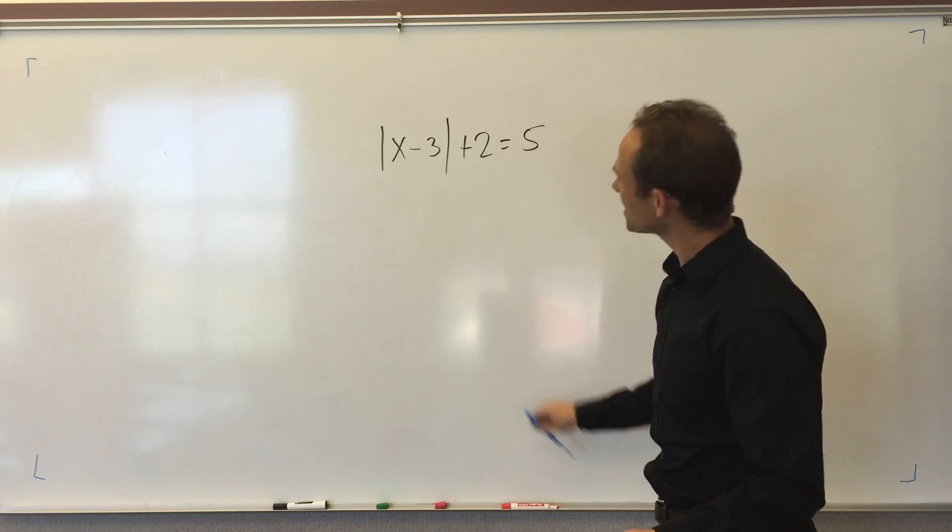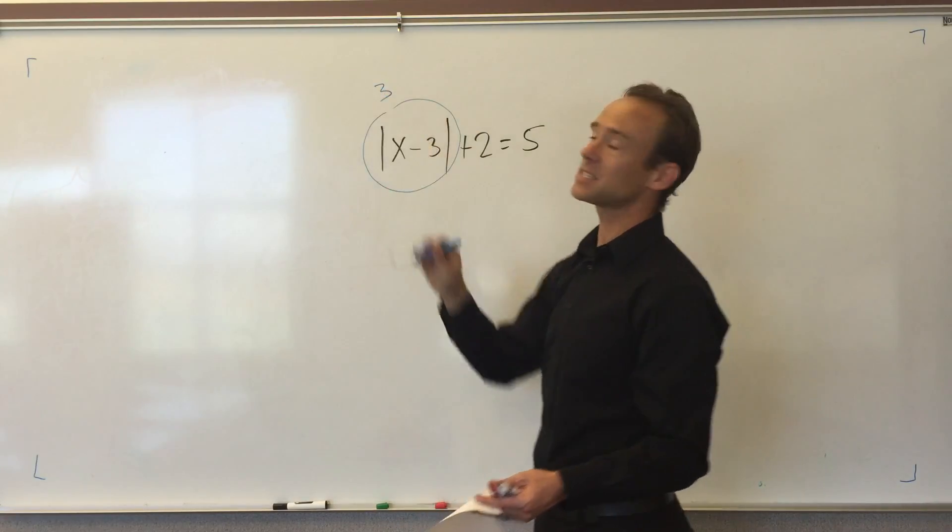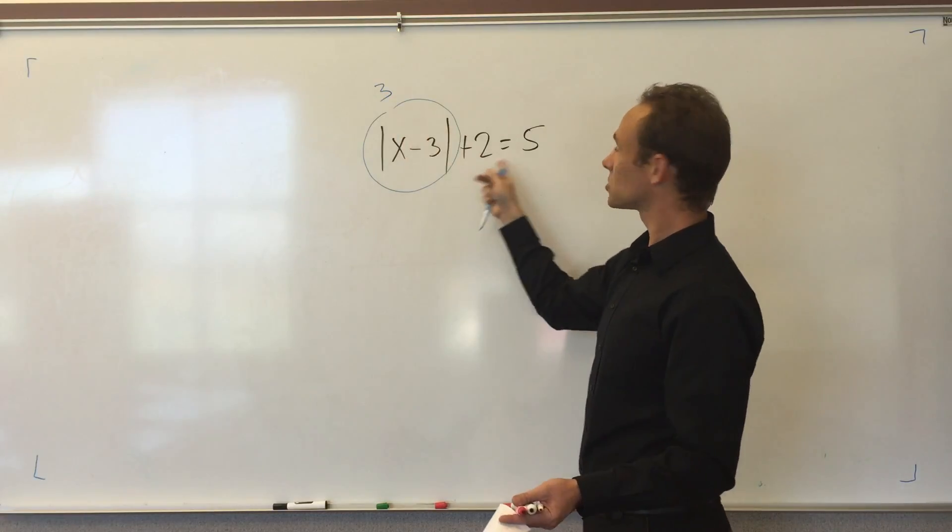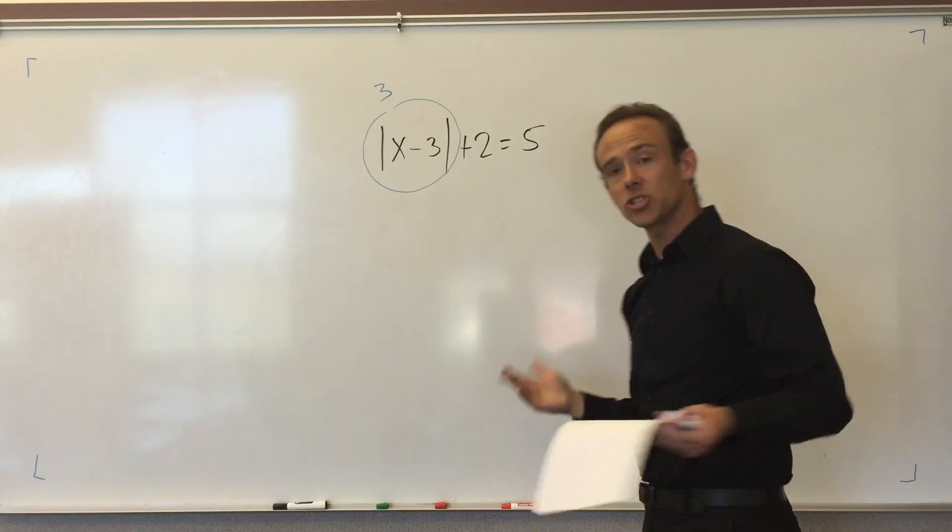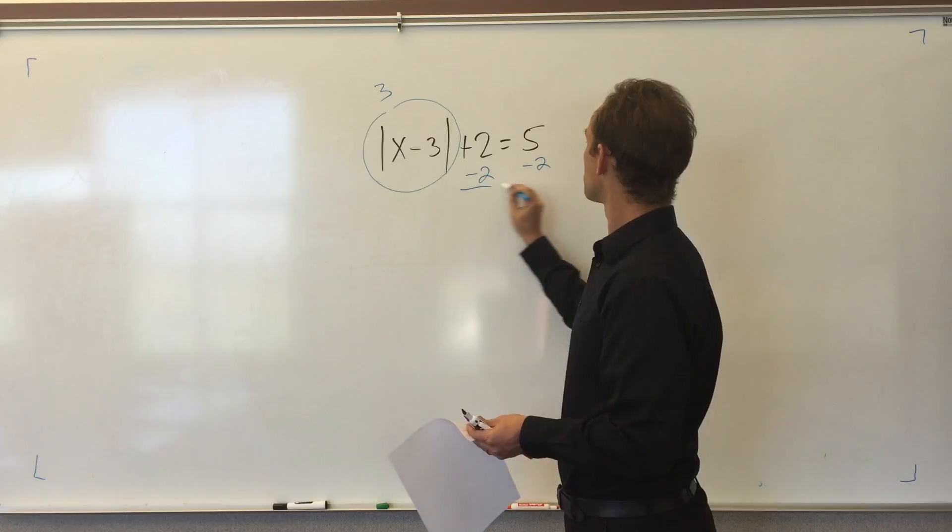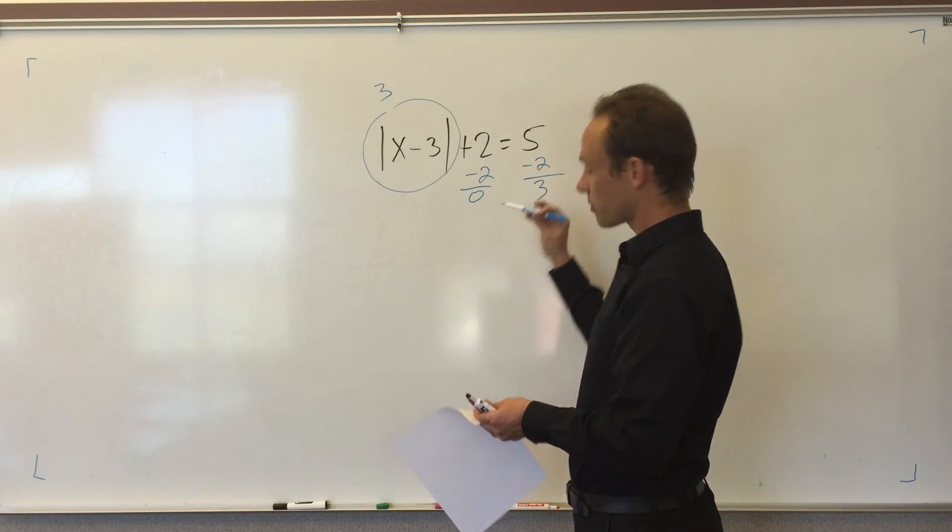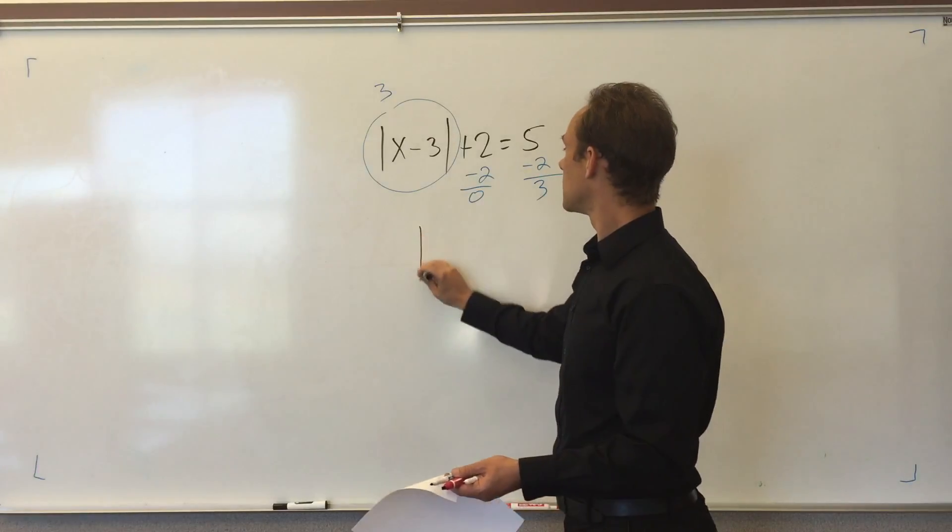We could look at this and say that blue circle is probably 3 because 3 plus 2 is 5, but I'm going to use a more traditional approach. I'm just going to subtract 2 from both sides, and that gives me 0 and a 3.